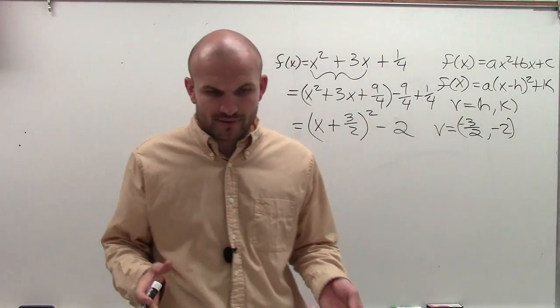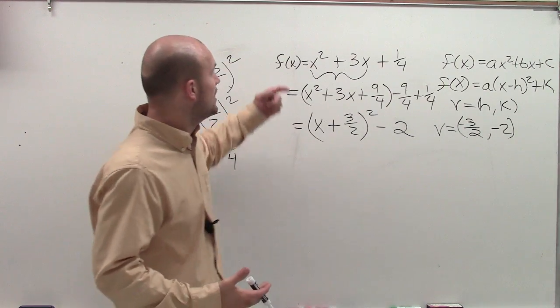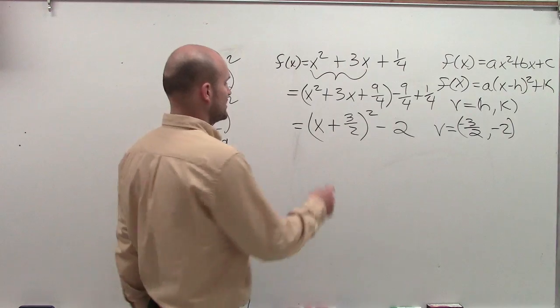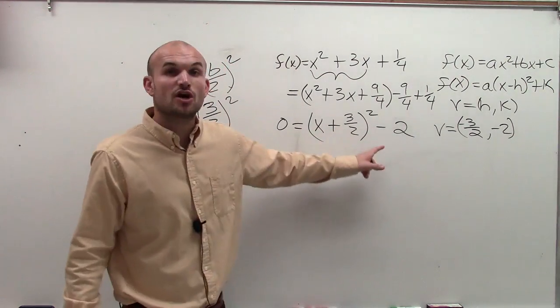So the next thing we want to do, ladies and gentlemen, is we want to find the x-intercepts, and remember the x-intercepts are when f of x equals 0. So what I'm going to do is, you could easily solve for 0 here and solve by completing the square.